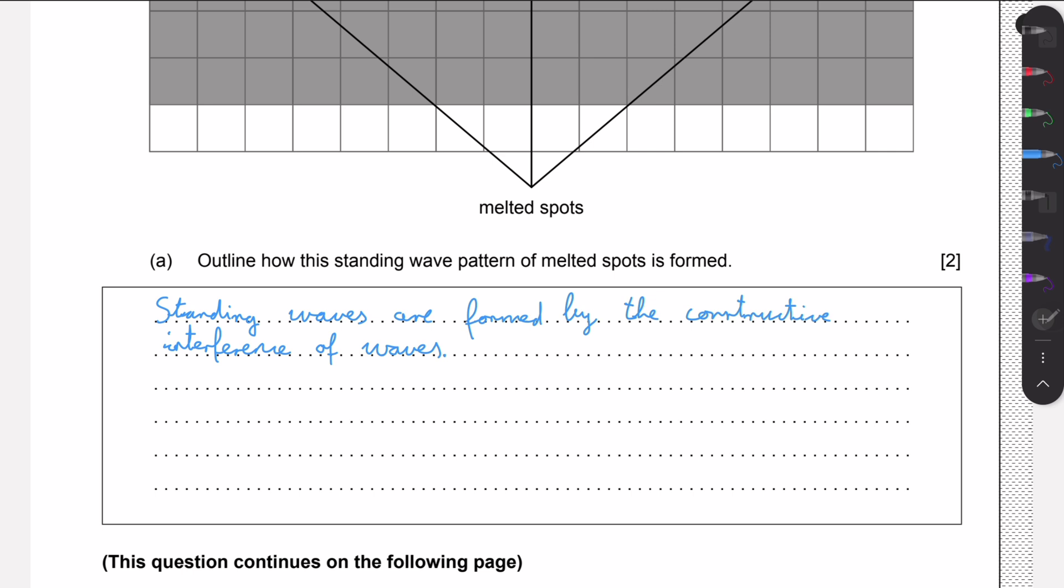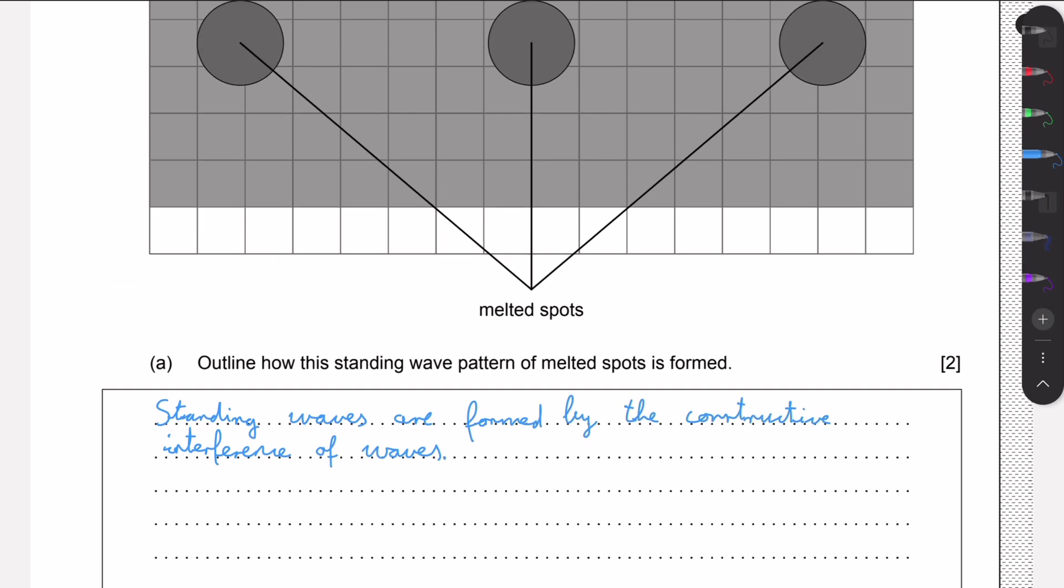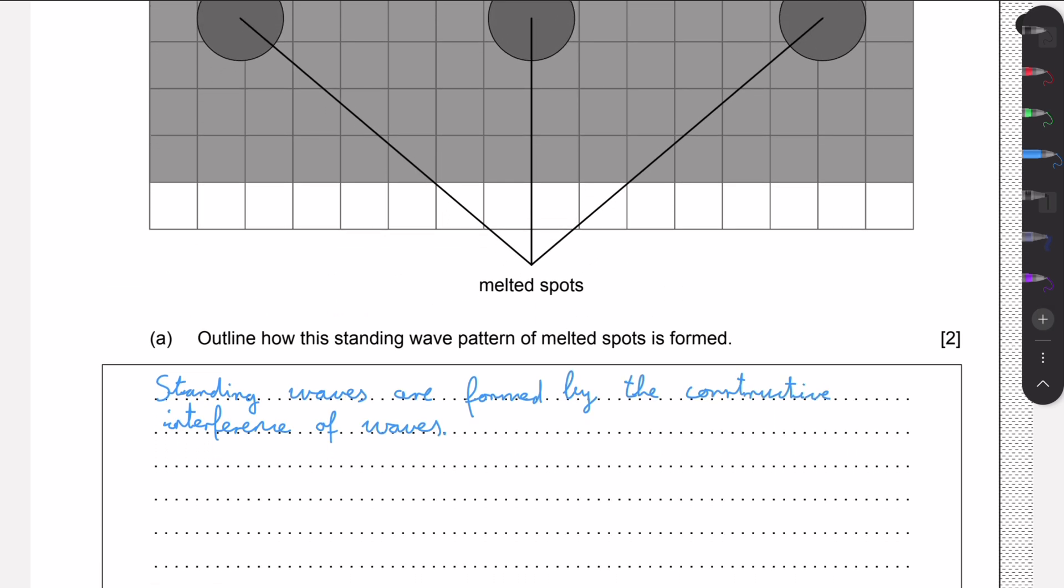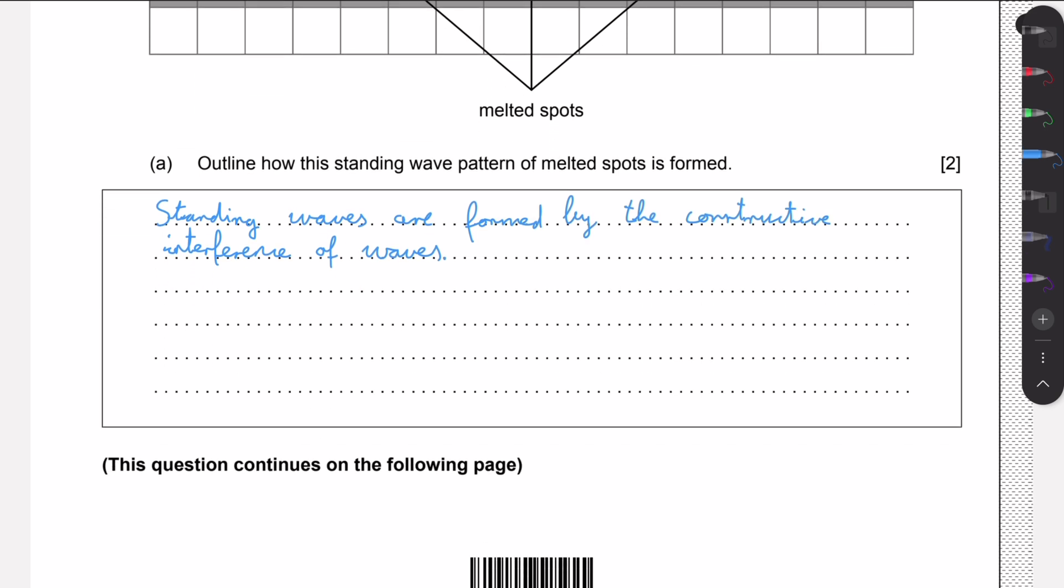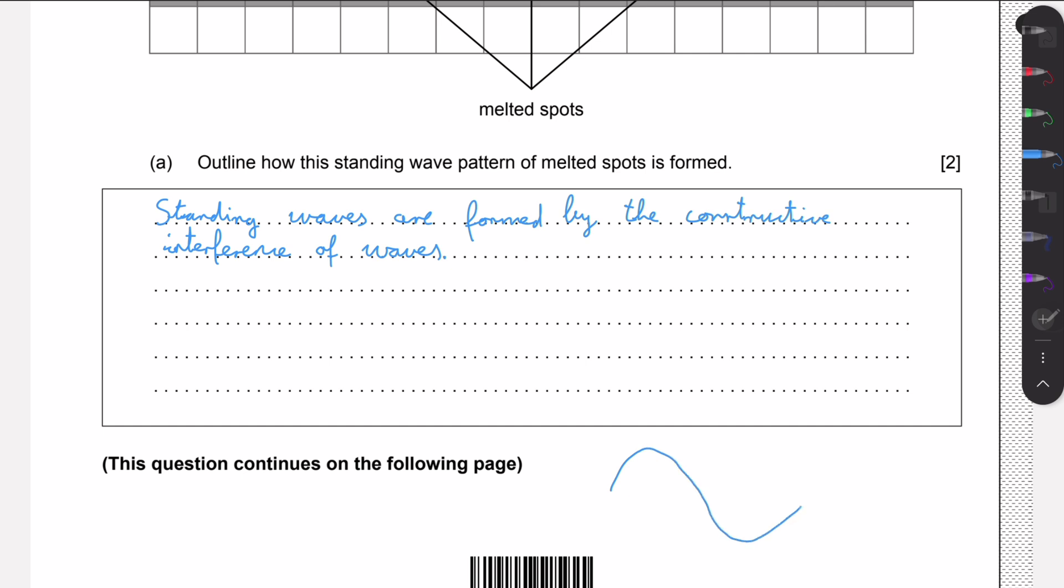We get a mark for writing how a standing wave is formed, and then we also need to know that when we have the maximum amplitude of a standing wave, we have maximum energy transfer as the amplitude of the motion is proportional to the energy being transferred. So whenever we have a maximum amplitude spot, that's where we will have maximum energy transfer.